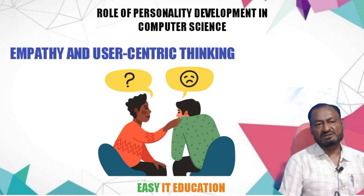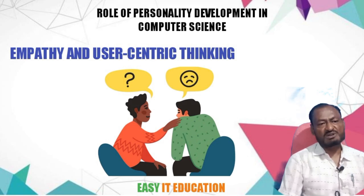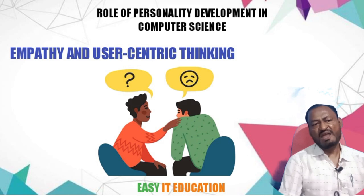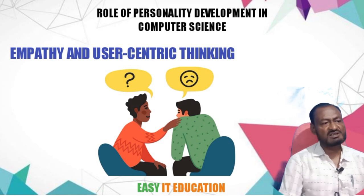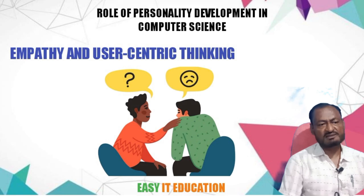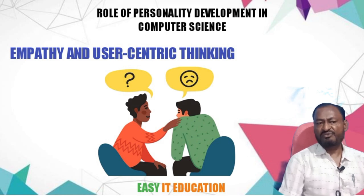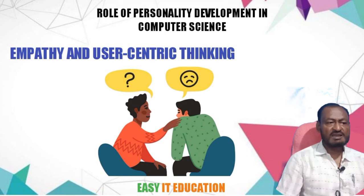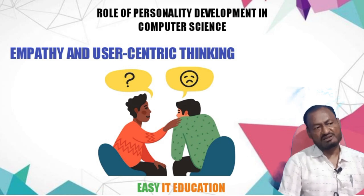Number ten: empathy and user-centric thinking. Considering the needs and perspectives of end users is crucial in computer science. Developing empathy and user-centric thinking allows computer scientists to design intuitive interfaces, improve user experiences, and create software solutions that genuinely address user needs.